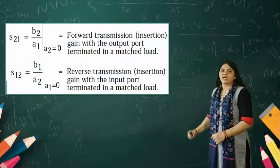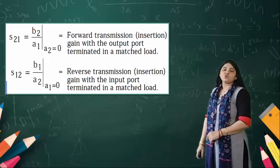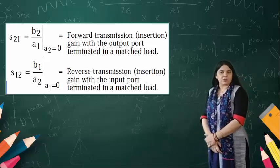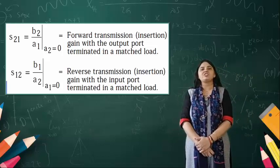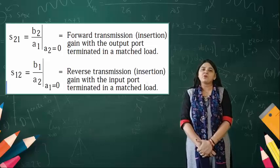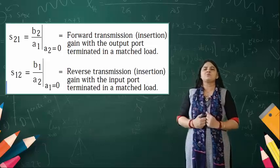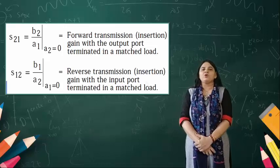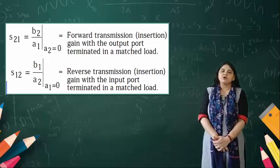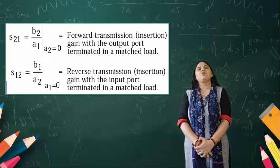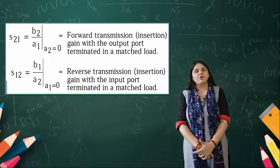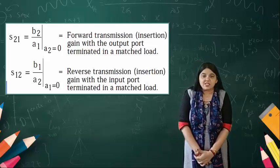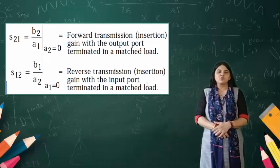The parameter S21 = B2/A1 with A2 = 0, found when port two is connected with matched termination and input is applied from port one. This is the forward transmission or insertion gain with the output port terminated in a matched load. S12 = B1/A2 with A1 = 0, representing the reverse transmission — insertion gain with the input port terminated in a matched load.